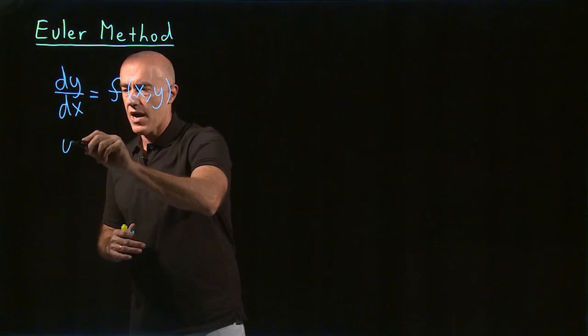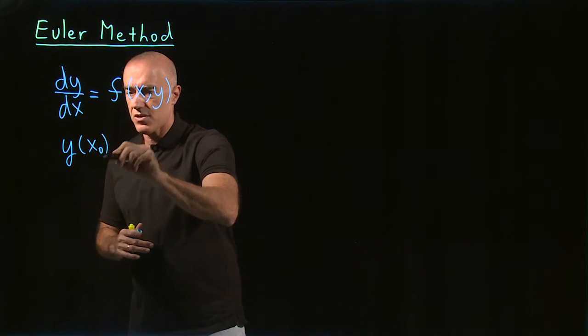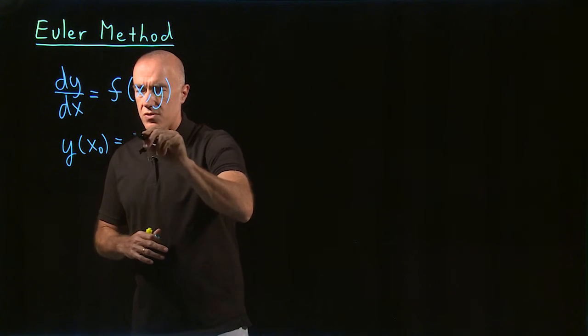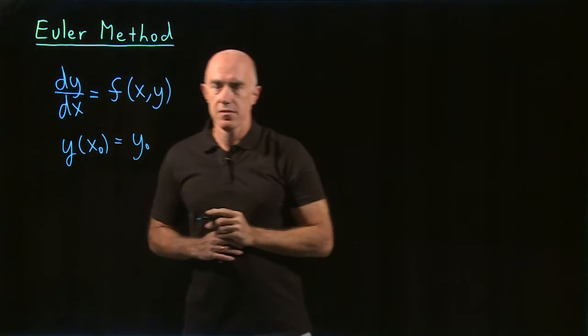So we have y at some initial value of x, which I'll call x naught, equal to y naught.